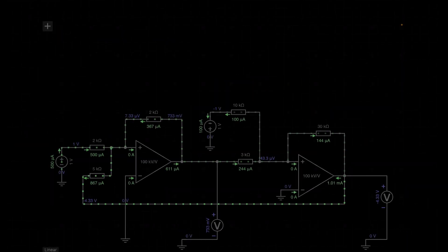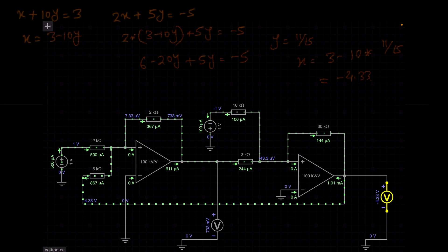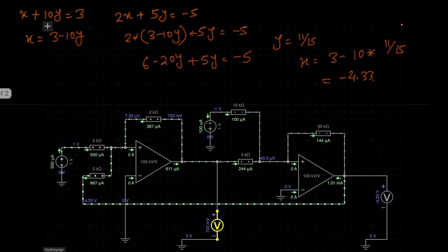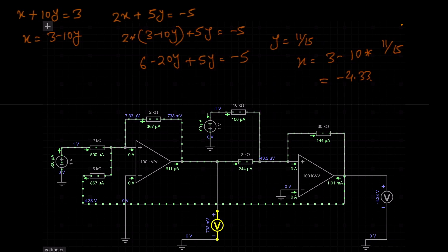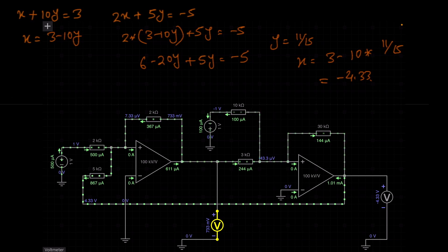This is running. You can see the output of op-amp 2 is reading minus 4.33 volts, and the output of op-amp 1 is reading 733 millivolts. And that is exactly matched with the solution of this equation.